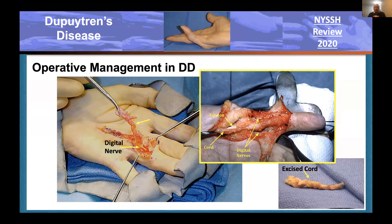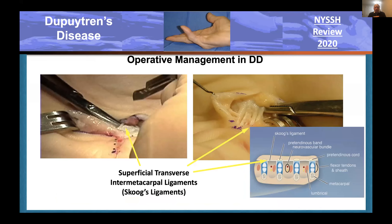Here are images of surgical sections noting the digital nerve, flexor tendon, the cord, and the excised cord. Here you see the transverse ligaments of Skoog—the clamp is protecting the underlying neurovascular bundles as these are cut. Some people advocate leaving the transverse carpal ligaments intact, but I always find that releasing the transverse carpal ligament and seeing the neurovascular bundle and following the nerve, particularly distally, is important to the safety of the nerves and arteries.